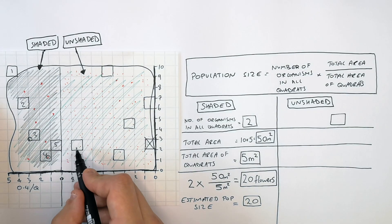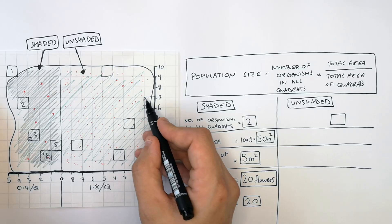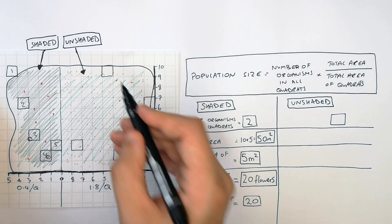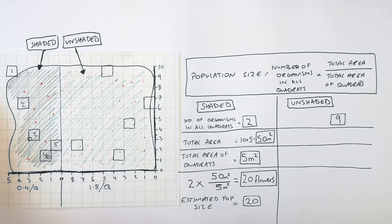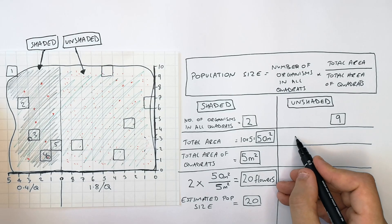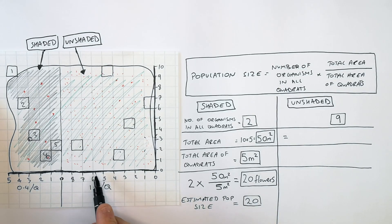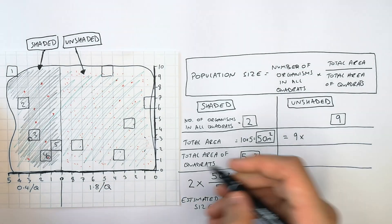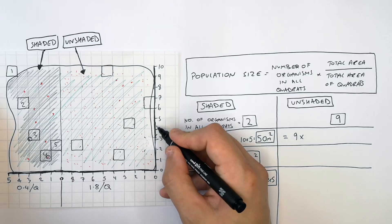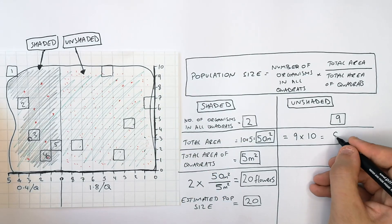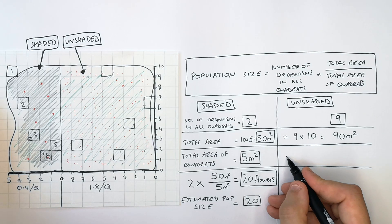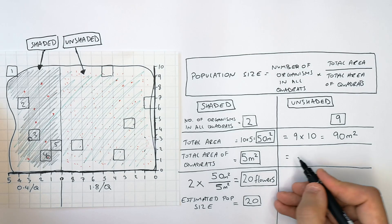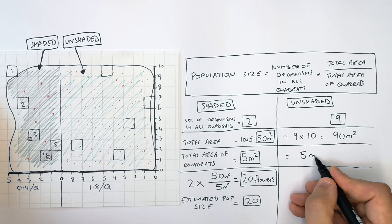In the unshaded region where there is more sunlight, we counted a total number of organisms in all the quadrats of nine plants. We then have to calculate the total area — in this case it's 10 meters times 9 meters, giving a total area of 90 meters squared. The total area of quadrats remains 5 meters squared.